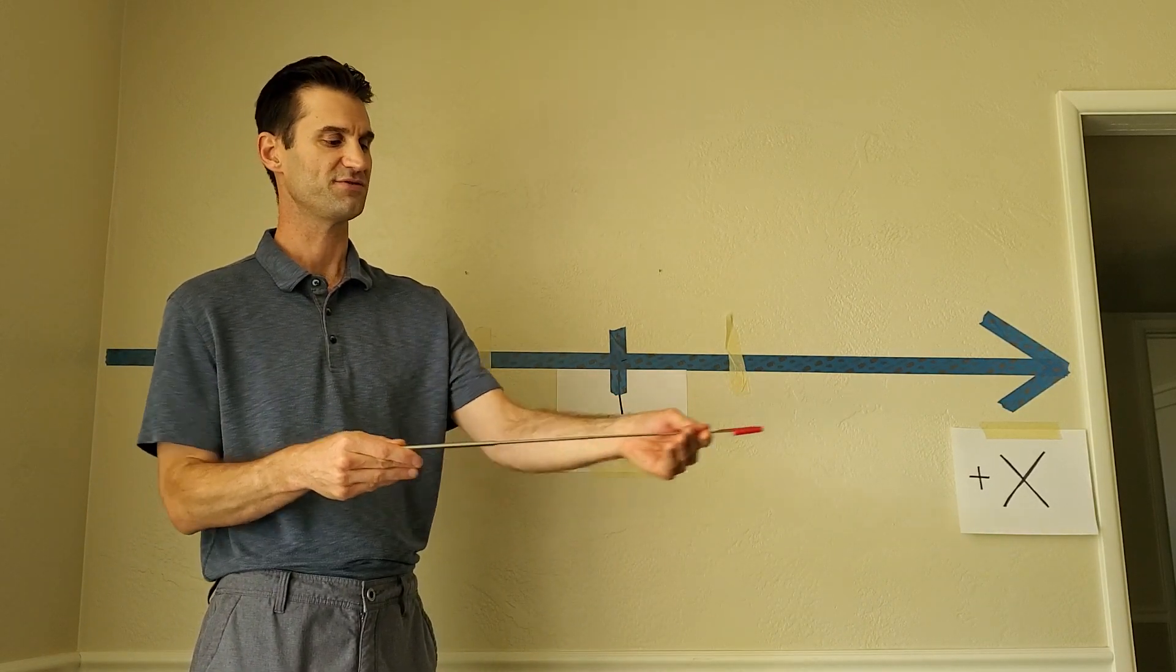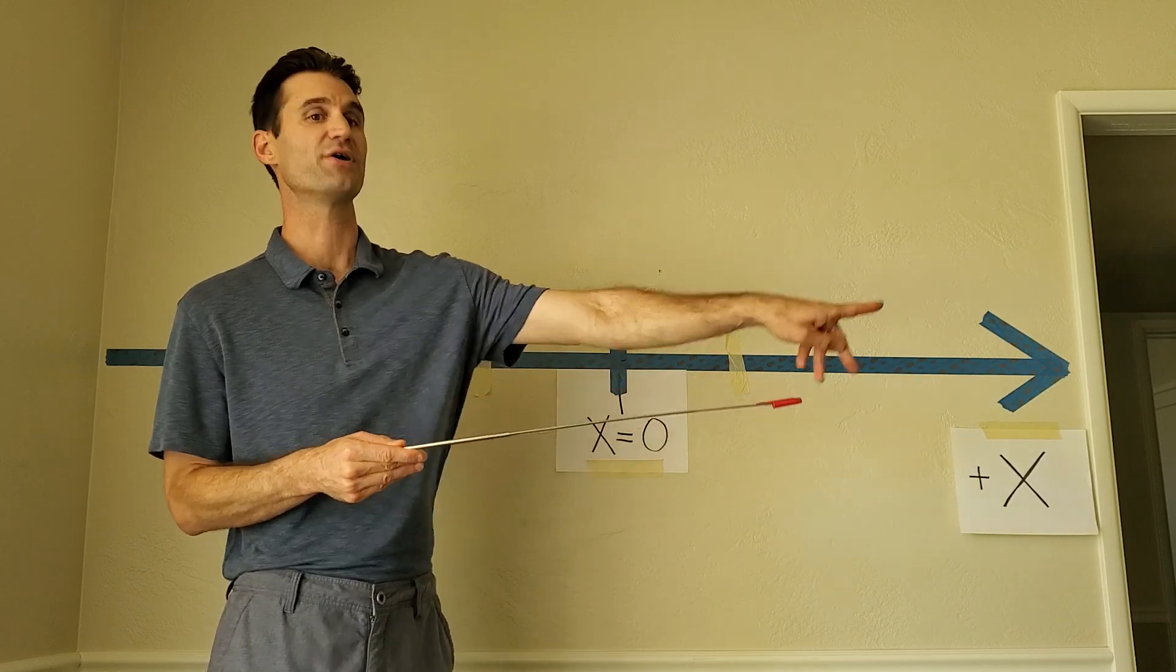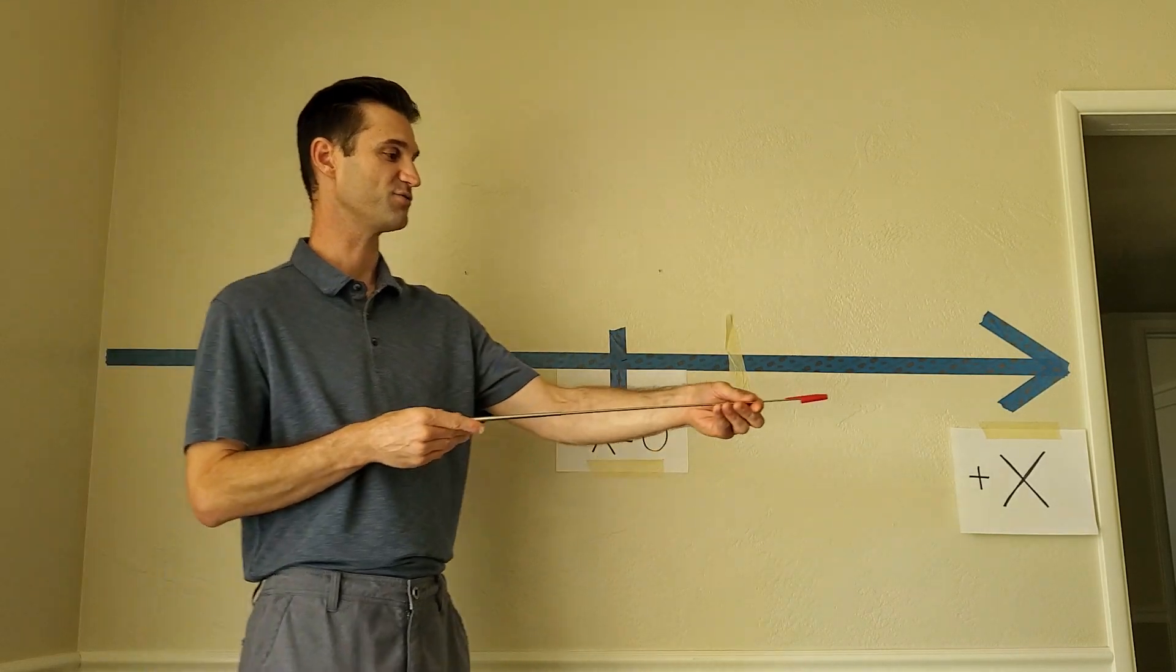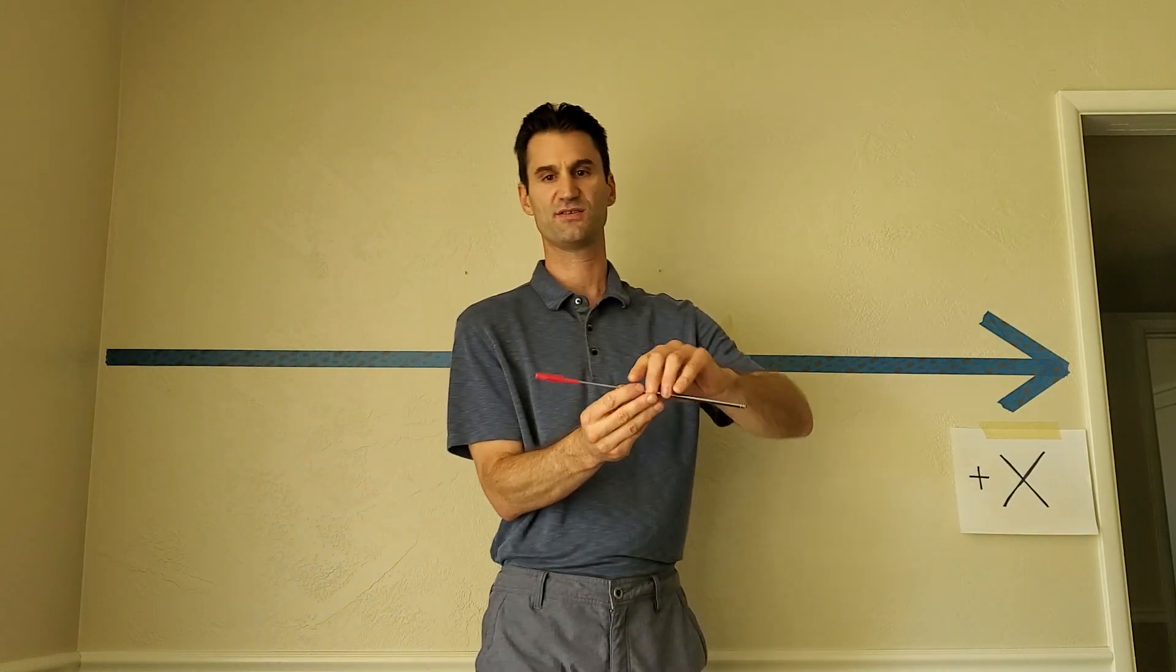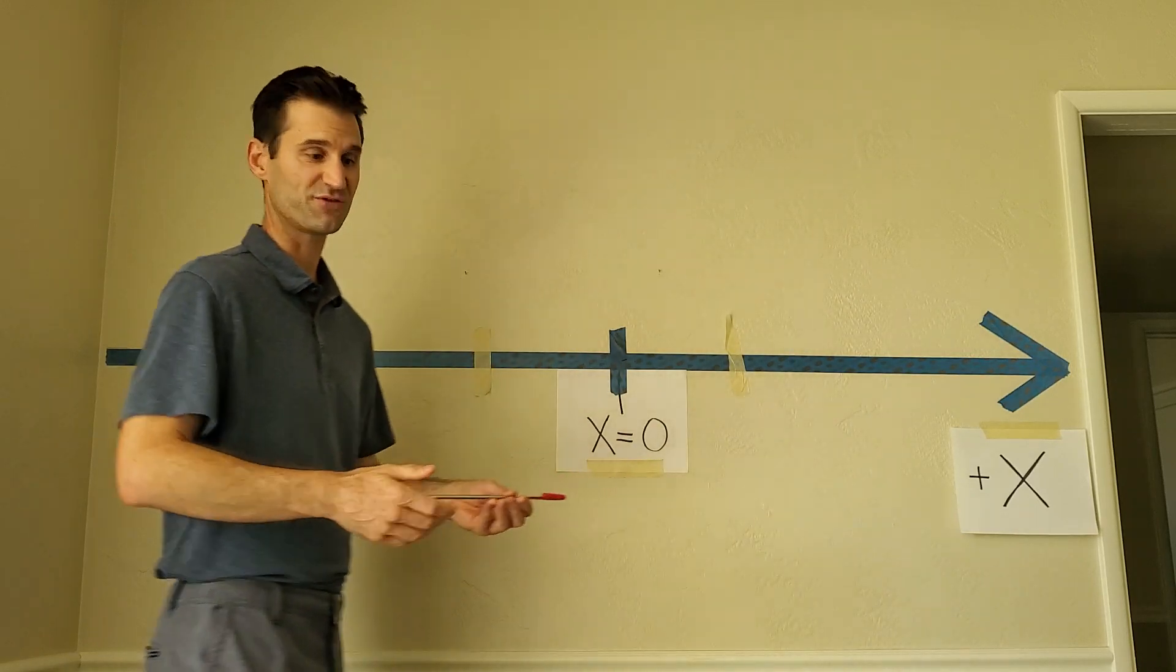So this is slow. This is fast. And the direction that it points in tells you which direction you're going in. So if it points this way, this is towards the right positive. If it points this way, this is towards the left negative. And let me demonstrate here.